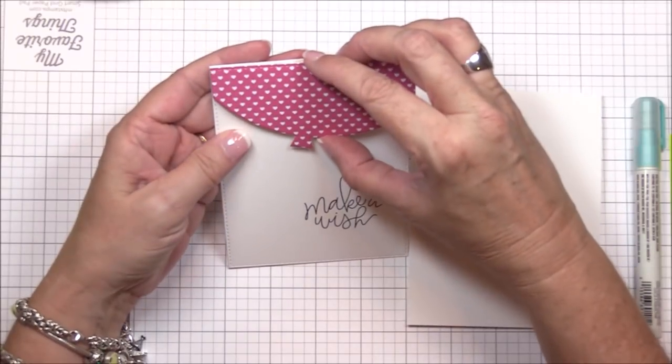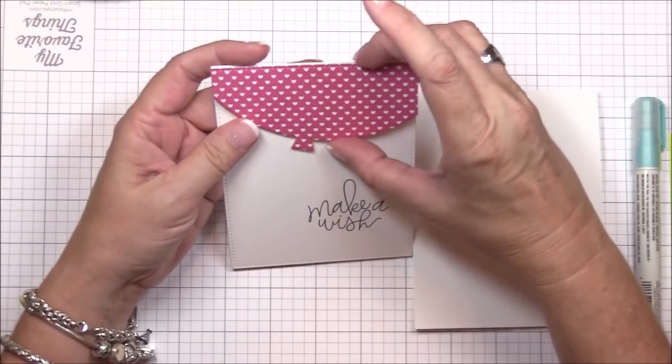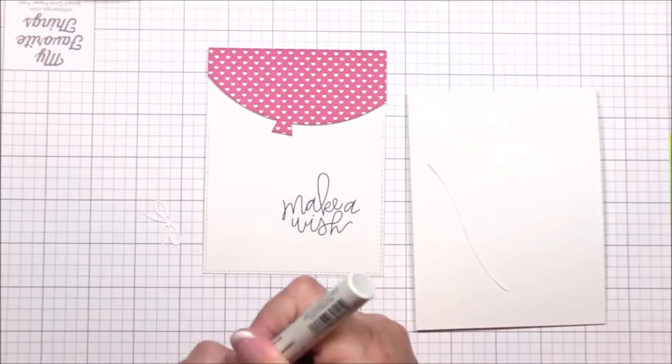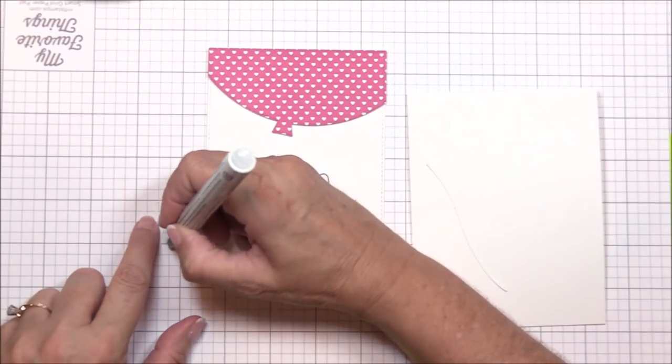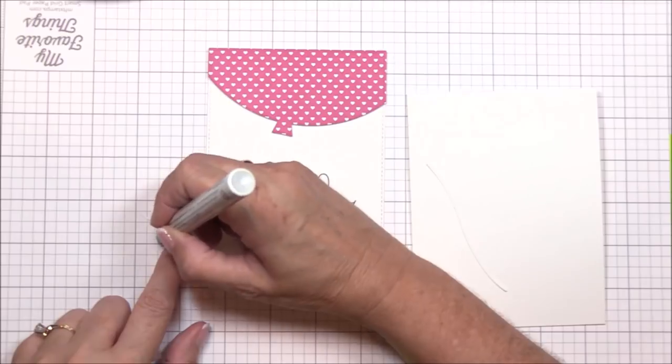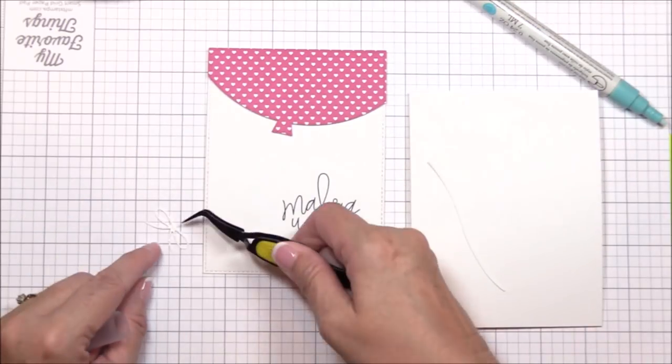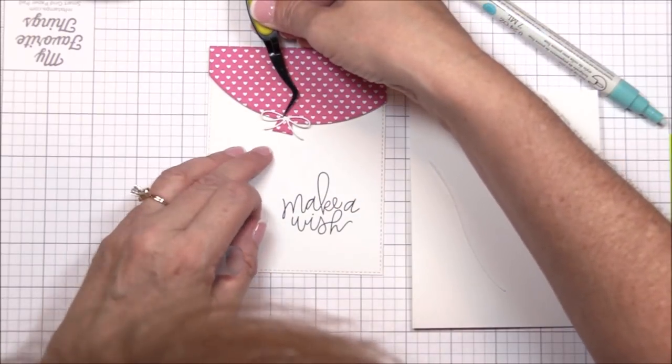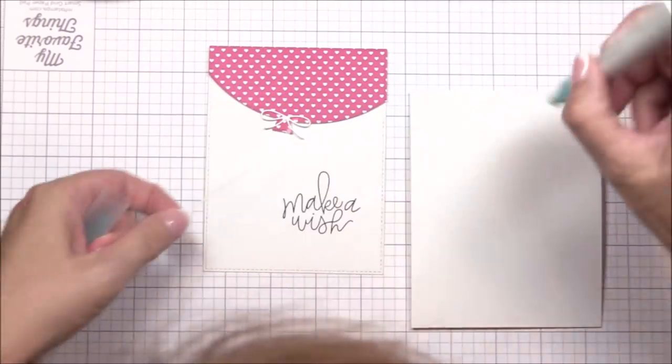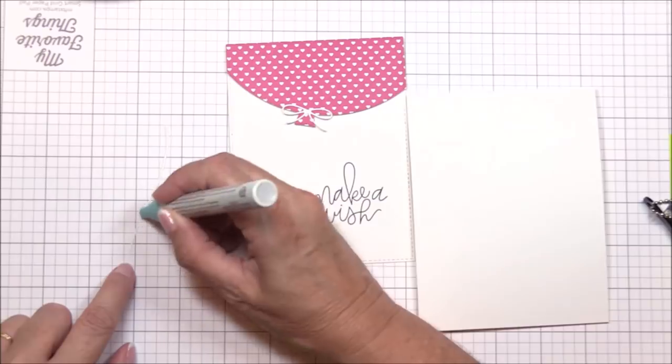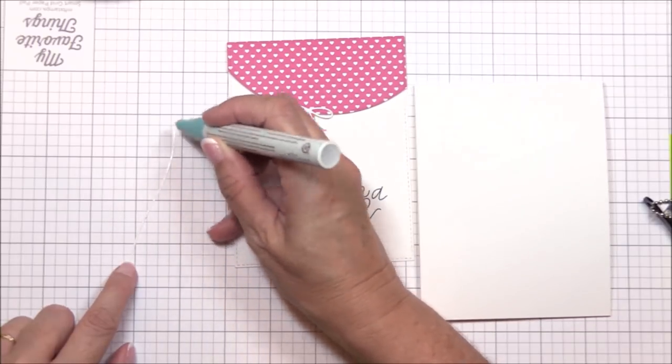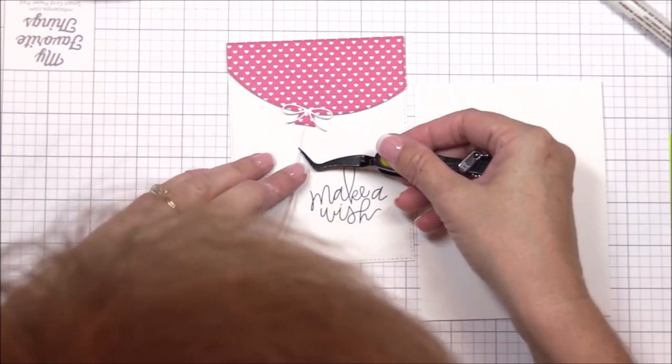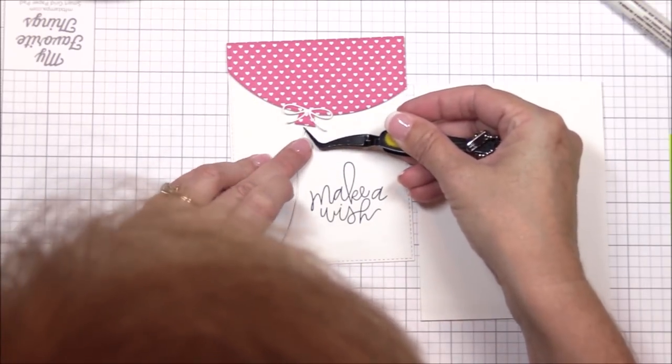I adhered a strip of patterned paper from the mini hearts brights six by six paper pack to an A2 panel of smooth white cardstock and I die cut it using the partial balloon die from the blueprints 26 die-namics. I also added a stitched edge using the same stitched rectangle die from before. I'm adhering it to the image panel using foam squares and then I'm adhering the bow and the string for the balloon with a glue pen. These are just a few simple details but it's these details that bring the whole card together to create a cohesive design.